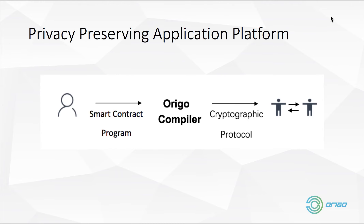Besides the applications, we also want to provide a privacy-preserving application platform. You can treat a smart contract as a normal smart contract, then use our compiler to fit your smart contract into our protocol to actually do this job. The developer doesn't need to think about zero-knowledge proofs — they can just write simple code, use the compiler to fit it into the protocol, and things get done. That's today's content. Tomorrow I will talk about the security and trust model. Thanks for listening and see you tomorrow.